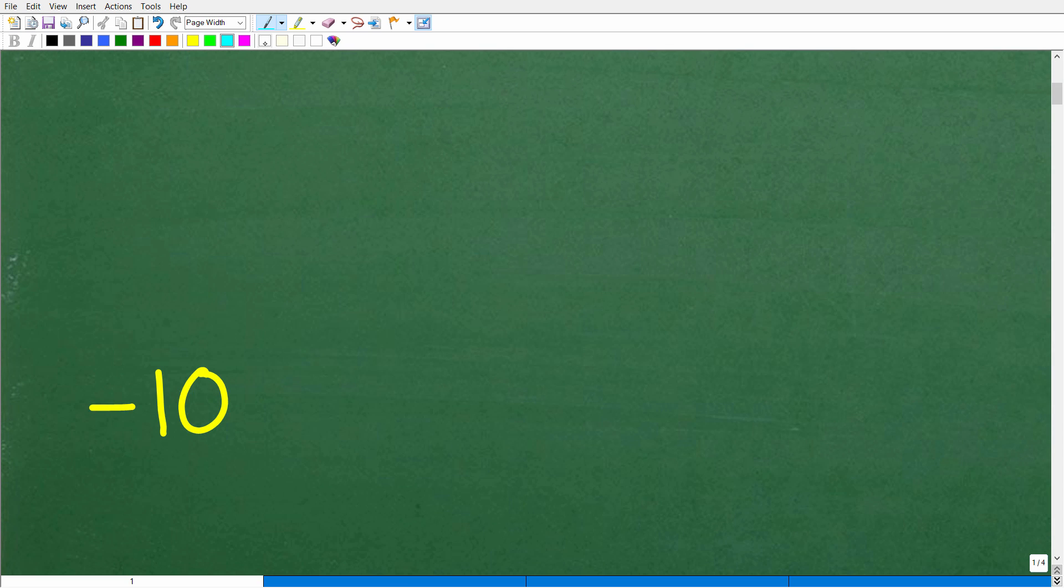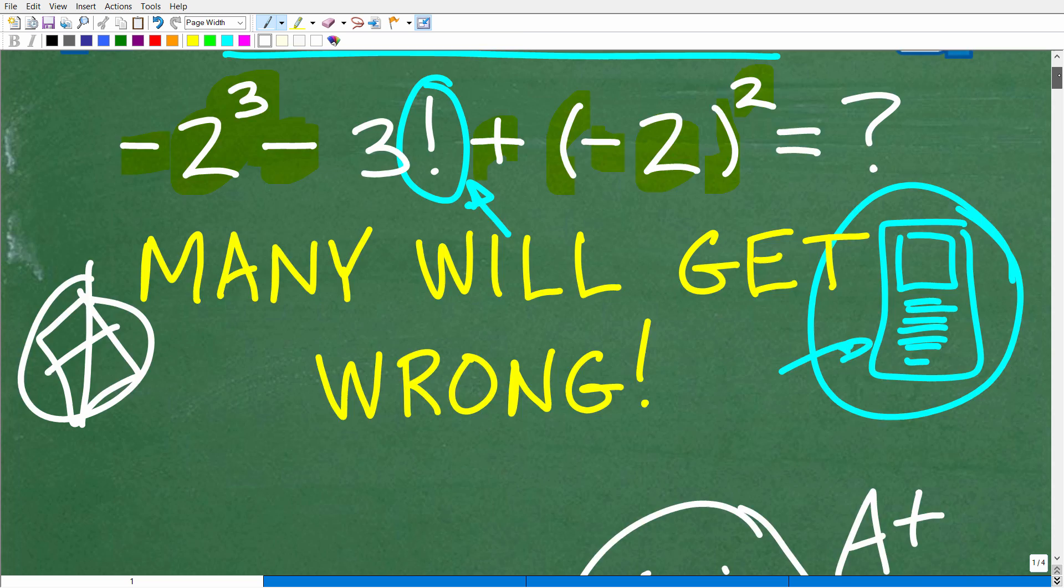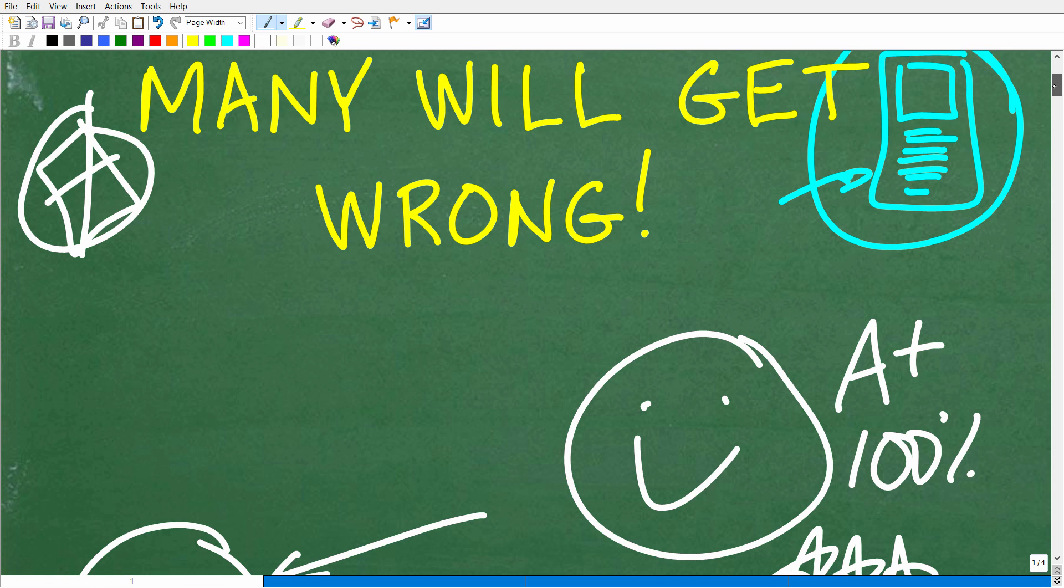Let's go ahead and take a look at the answer right now. So the answer to this problem is negative 10. How'd you do? If you got this right, that is very good. Let's celebrate by giving you a nice little happy face and A plus, 100%, and multiple stars so you can brag to your friends and family that indeed you are a professional certified expert in the area of powers, especially negative powers and factorial and the order of operations.